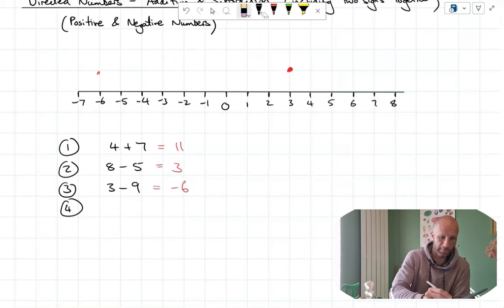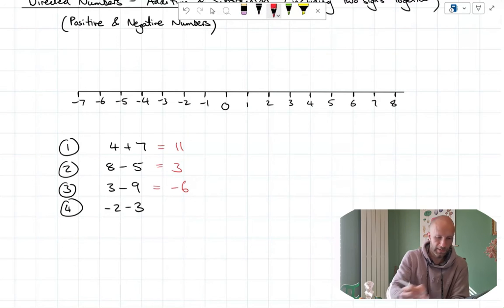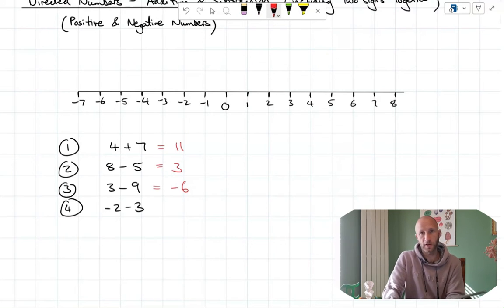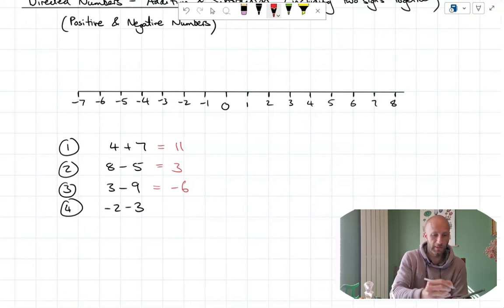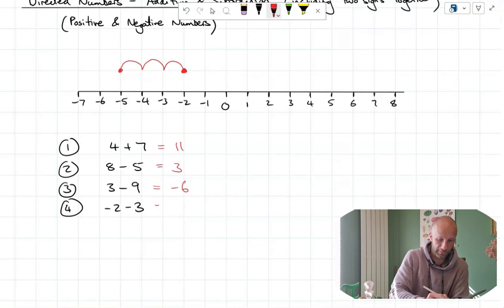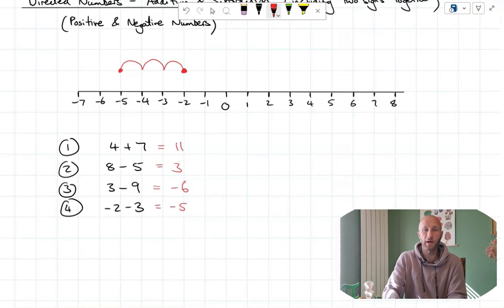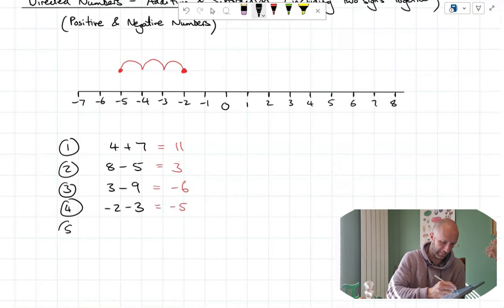Let's have a look at another one. Let's do -2 - 3. So again, this time the start point being important. Minus two is my starting point, so I'm going to start here on my number line. And if I'm taking three away, I'm moving in the negative direction. So three away is going to take me to minus five. -2 - 3 is -5. And the best way of doing this is just to keep practicing as much as possible, and you'll get quicker at it and more confident with it as well.